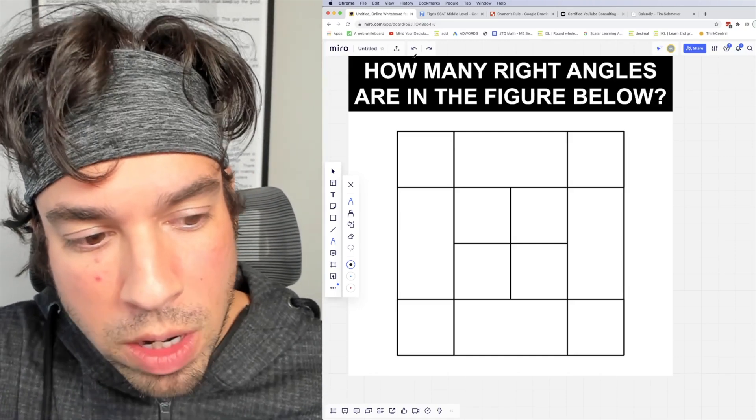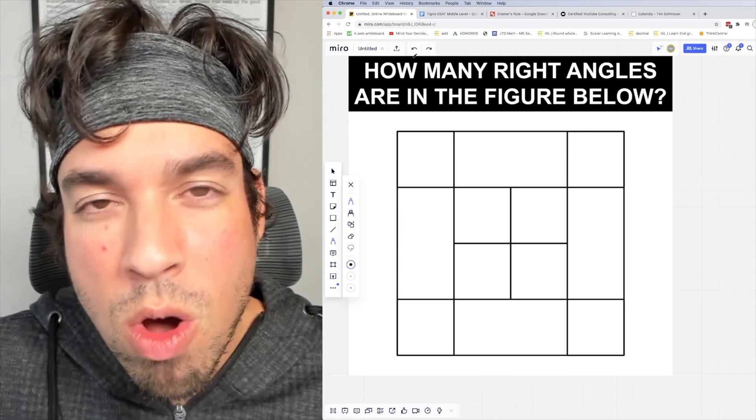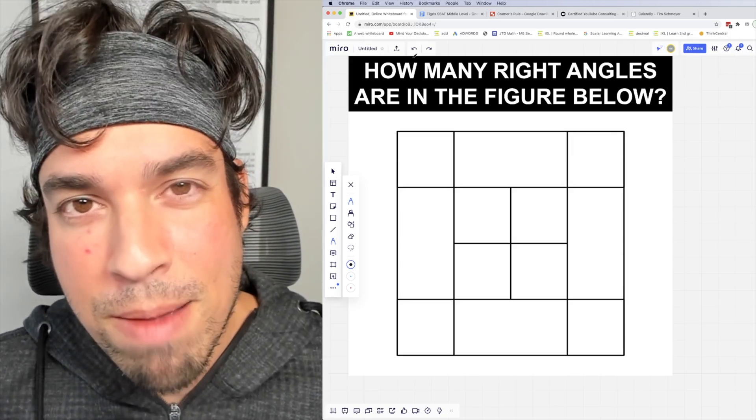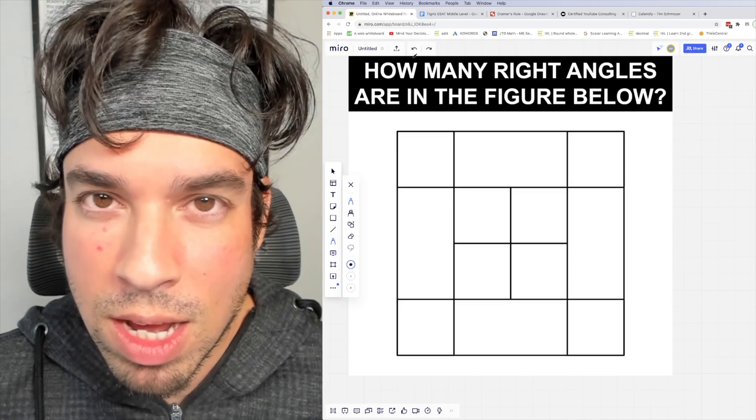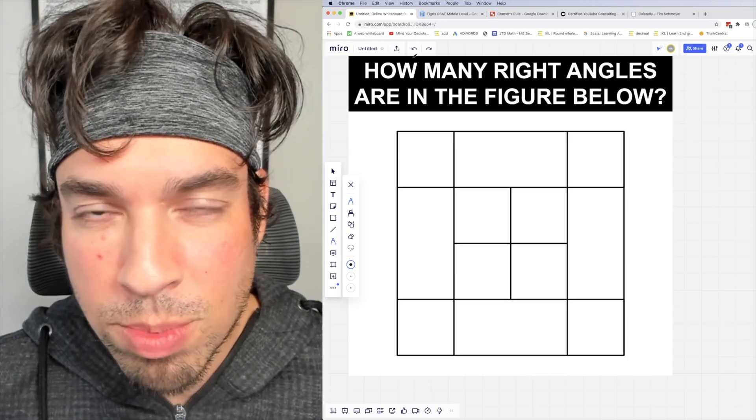You want to look at this figure with all these squares and rectangles and count up all of the right angles that you see. Go ahead and hit that pause button and see if you can figure it out. When you're ready, hit play, and I'll give you the explanation.